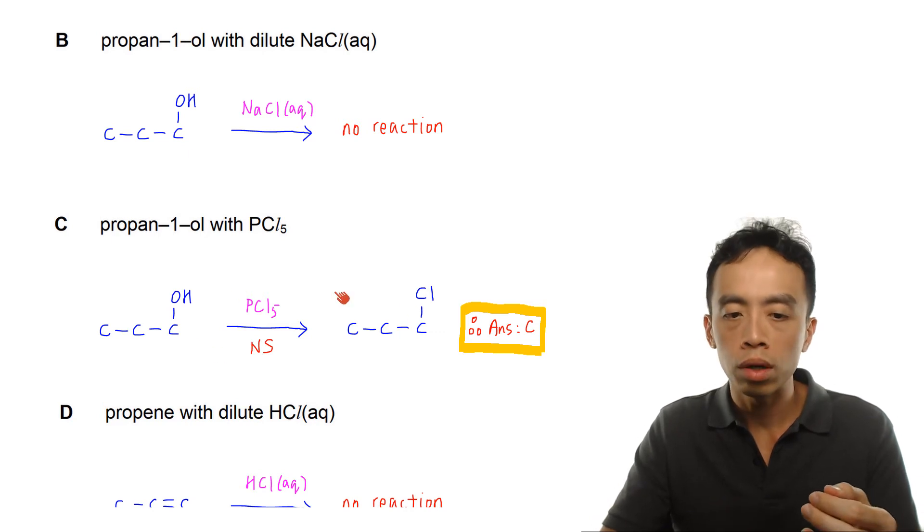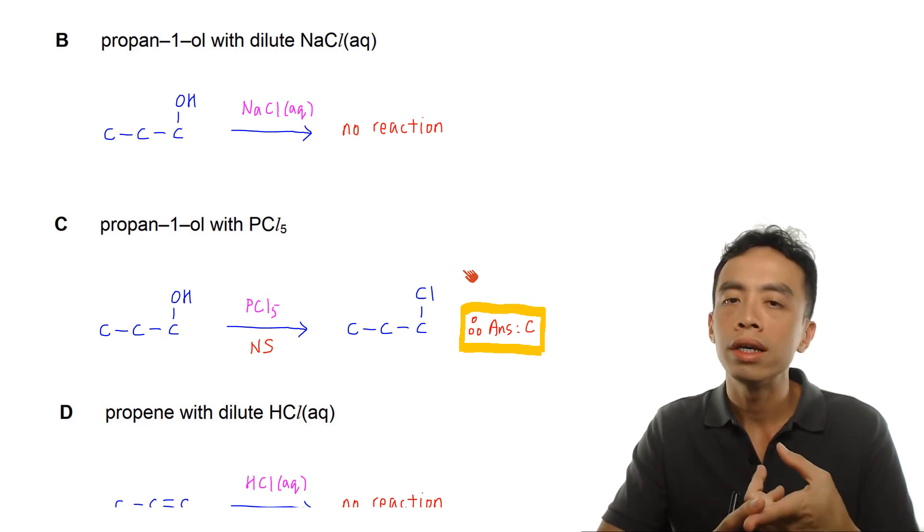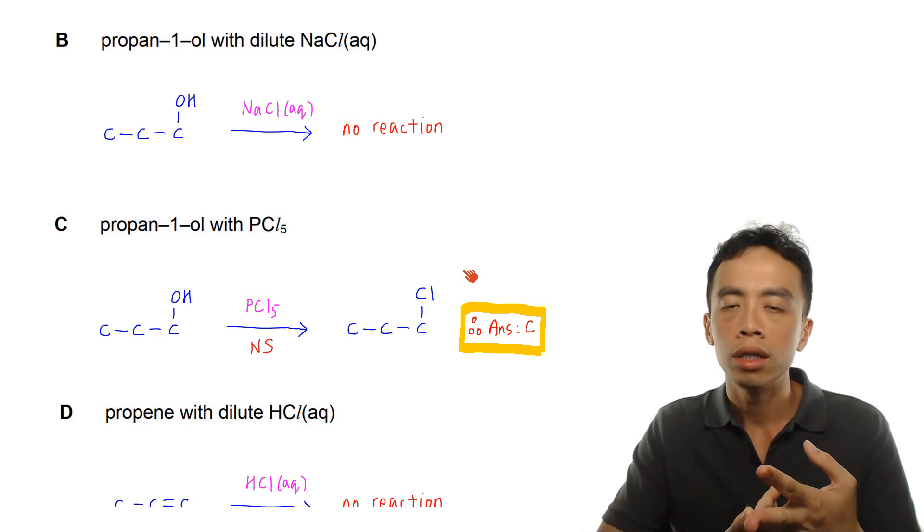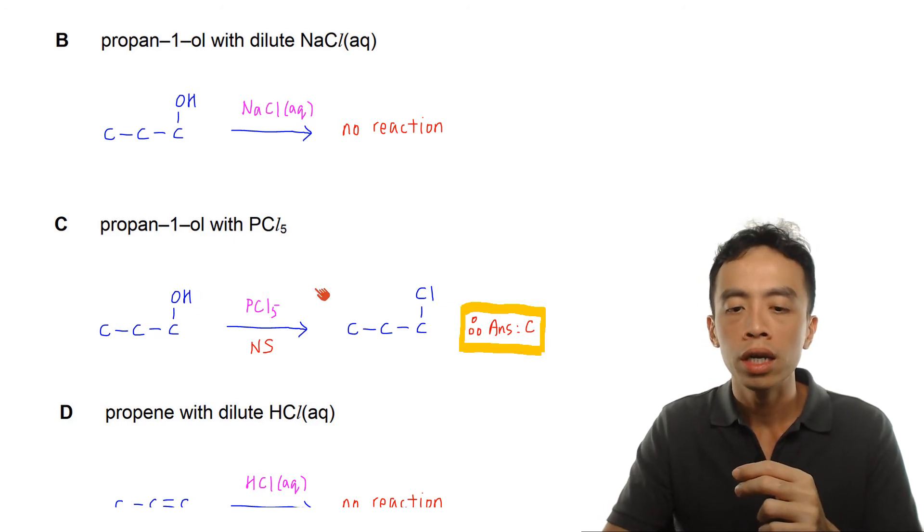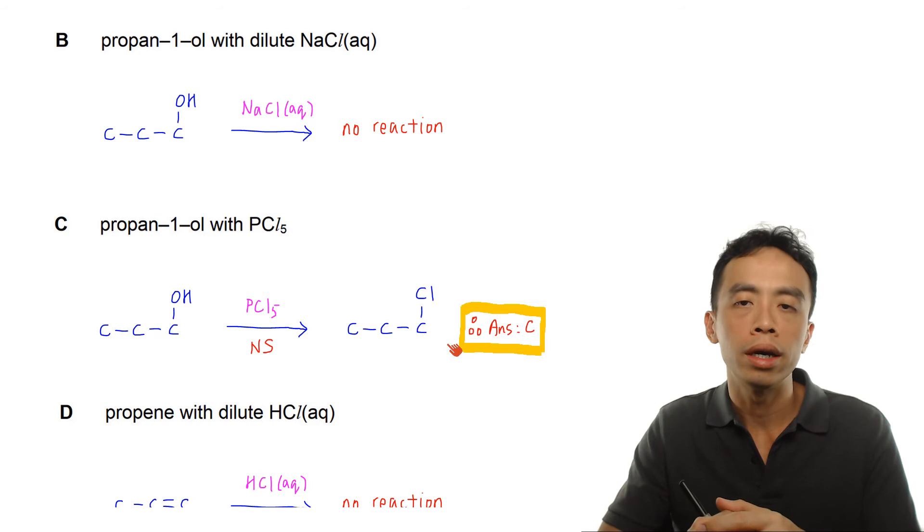And this same conversion, we can also use SOCl2, also anhydrous at room temperature. But both reagents, PCl5 or SOCl2, they both serve the same purpose. It is to replace or substitute the OH group with a chloro group. Now remember this is a nucleophilic substitution reaction. And you'll notice very nicely, this gives us the exact product that we want. It will give me 1-chloropropane. So option C, in this case, of course will be the best answer.